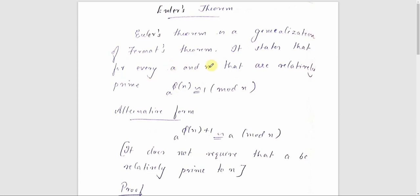So for two such numbers a and n, a raised to φ(n) is congruent to 1 mod n — this is Euler's theorem. Here φ(n) is the Euler's totient function, defined as the number of positive integers less than n and relatively prime to n.